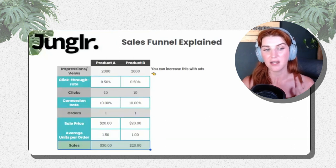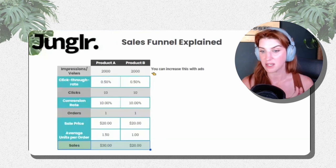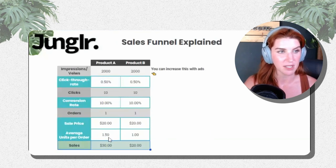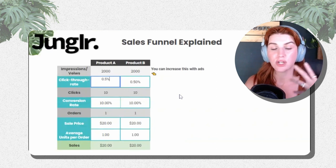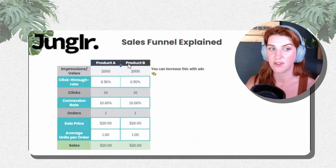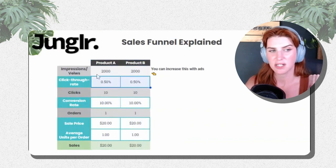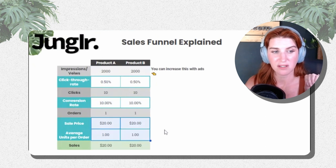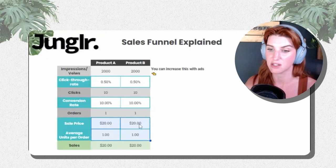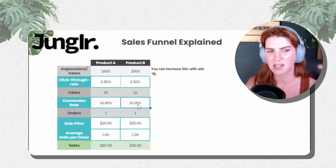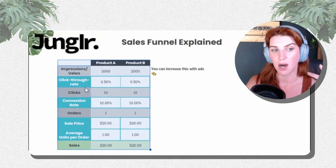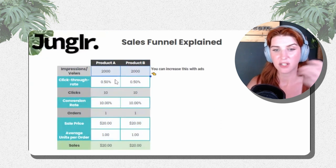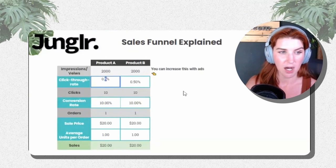If you can optimize average units per order, you can increase your amount of sales. It's a bit more difficult to optimize, but if your product lends itself to it, it's worth pursuing. Let's go back through and see what happens when we optimize. This spreadsheet can be used as a scenario-planning tool — plug in your impressions, tweak click-through rate, conversion rate, and sale price, and see what the end result looks like if you increase your sale price but your conversion rate drops a bit.